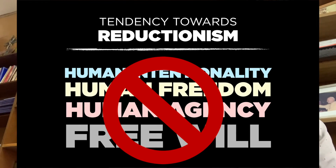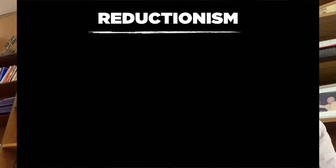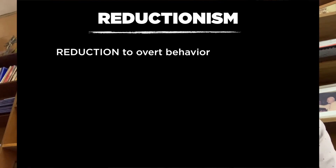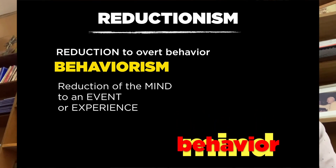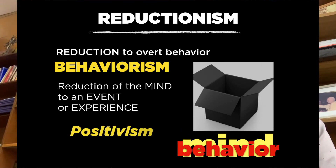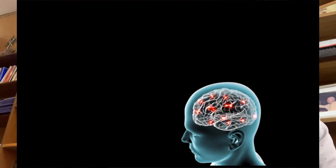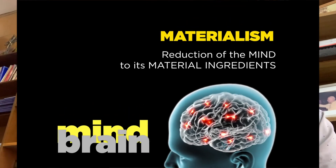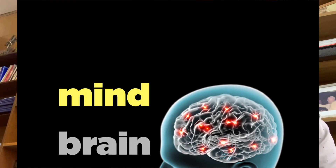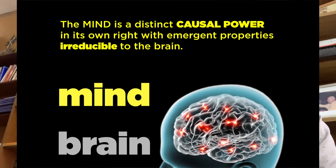One example of such reductionism is the tendency to reduce the mind to overt behavior — this is of course called behaviorism. Behaviorism is the reduction of the mind to an event or experience, something observable, something measurable. This is a form of positivism, but it's also a form of actualism. It's a denial of the domain of the real, because you're denying that the mind is a causal power unless it creates an event. Another form of reductionism pertaining to the mind is materialism — when the mind is reduced to its material ingredients, in a word, to the brain. According to ontological emergence, our mind is a causal power in its own right, with emergent properties irreducible to our brain.